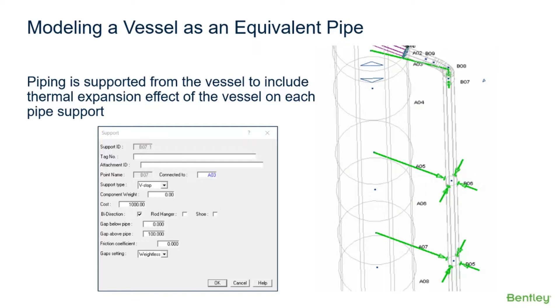And again, the connected piping is supported back to the vessel in this example. So to include thermal expansion effects of the vessel on each pipe support, each support will be connected back to the centerline of the vessel.